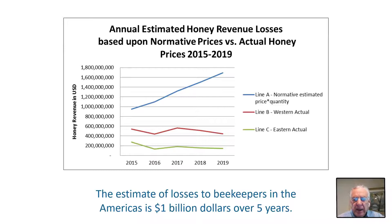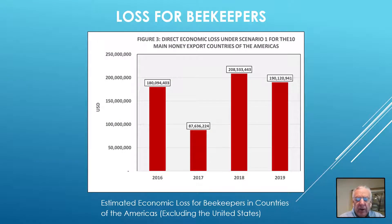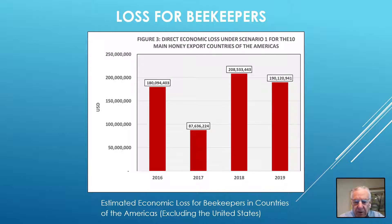The annual estimated honey revenue losses based upon normative prices versus actual honey prices are illustrated in this chart. A similar calculation was presented in my article in the American Bee Journal in June 2020, showing comparable prices for American beekeepers over the past four years. The committee studying food fraud in Apimondia — representing the World Congress of Beekeepers — issued a report describing the plague of adulteration as the greatest damage to beekeepers in the history of beekeeping.